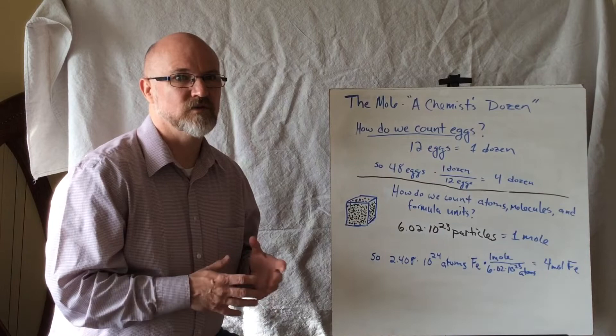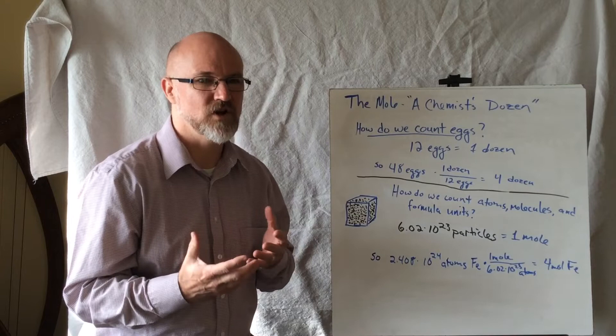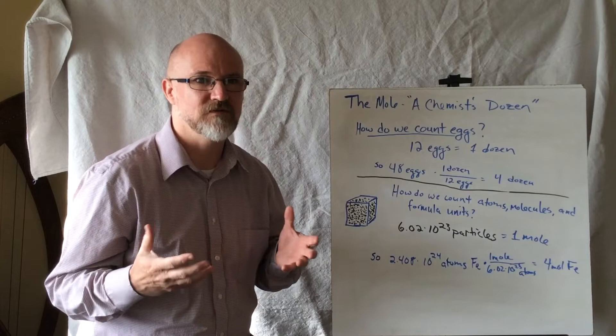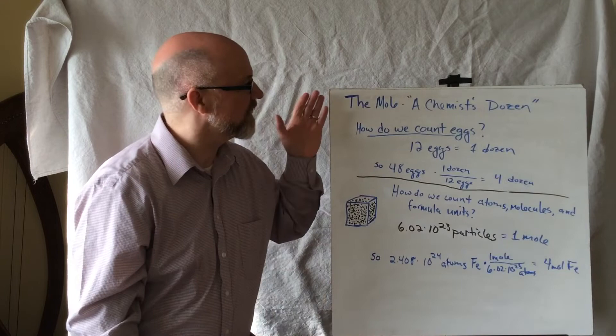We're moving into a new unit. We're going to take what we've learned about balancing equations and revisit them later. But we have to stop and talk about how chemists count things. Why? Because whenever we talk about production and chemical reactions, we're going to talk about yield - how much stuff goes in, how much comes out. We have to be able to count that. But atoms and molecules are too small to see and count, so we're going to introduce the concept of the mole.